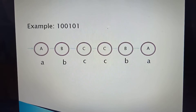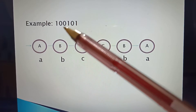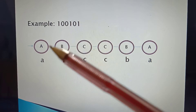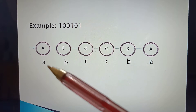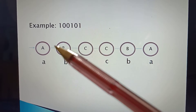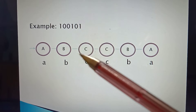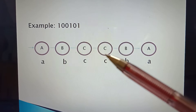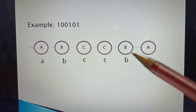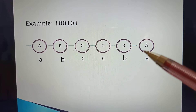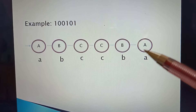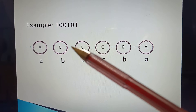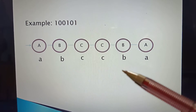Let's make an example for the Moore machine with input string 1,0,0,1,0,1. Input 1 → state A, output a; input 0 → state B, output b; input 0 → state C, output c; input 1 → state C, output c; input 0 → state B, output b; input 1 → state A, output a. So for input 1,0,0,1,0,1, the output is a, b, c, c, b, a.